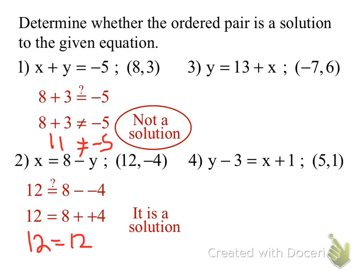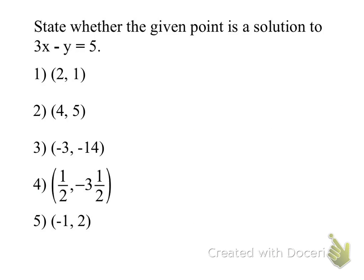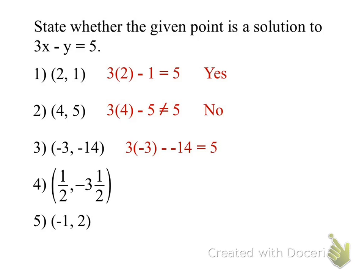Now check your work. Negative 2 does not equal 6, so this is not a solution. You just substitute it in and tell me: is this a solution? Yes. Is this a solution? No. Is this a solution? No. That's where you get yourself in trouble holding negatives in your head. This is negative 9, positive 14 — that does make positive 5.